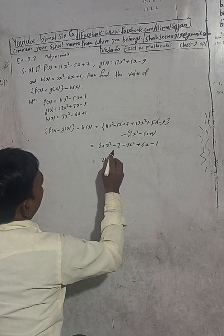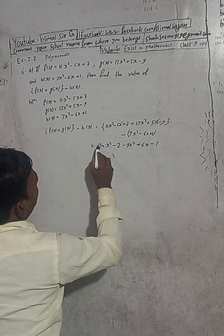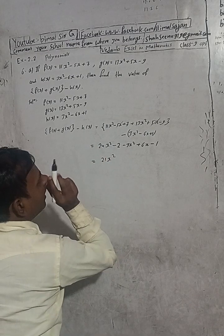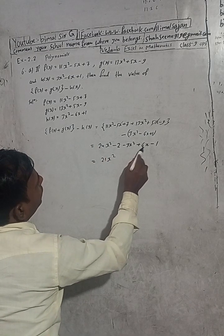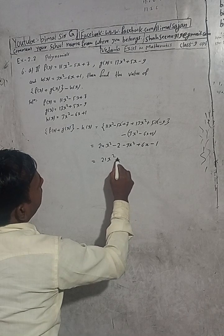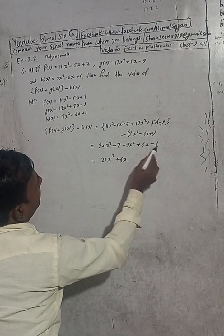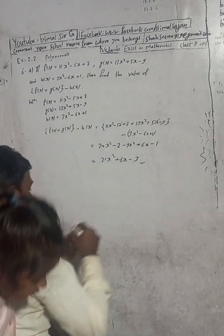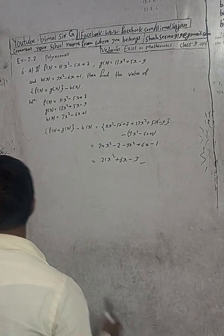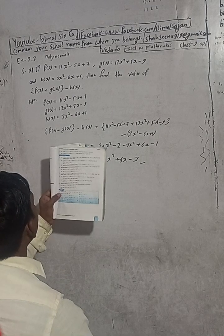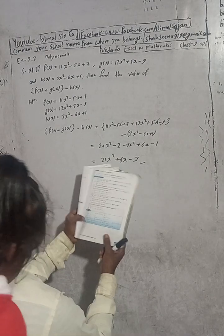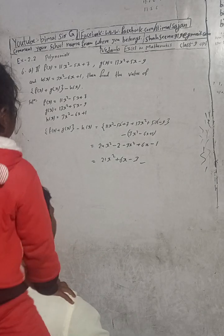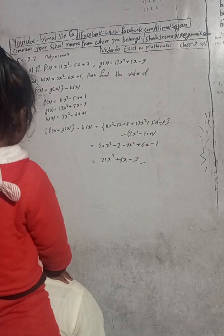We have 3x² and minus 3, plus 24 plus 6x, and the constant is minus 2 minus 1. So the final answer is 21x² plus 6x minus 3.